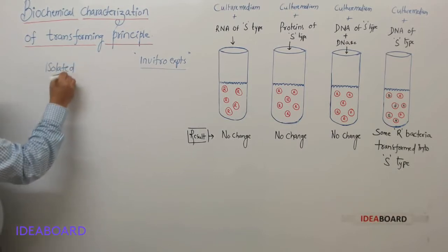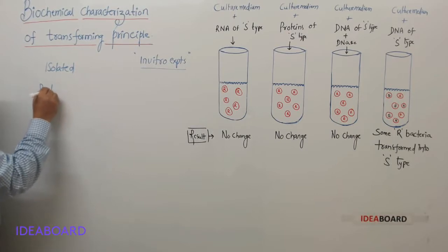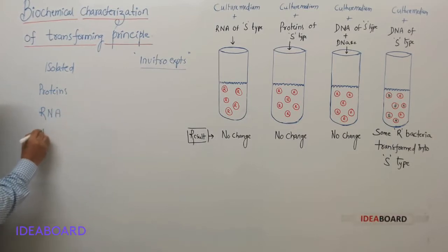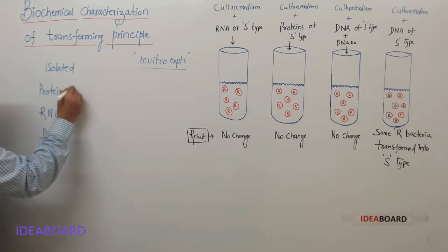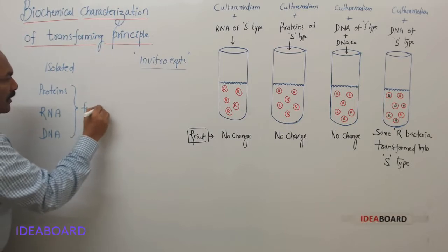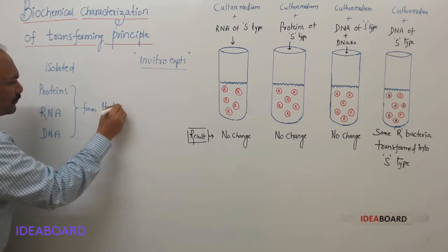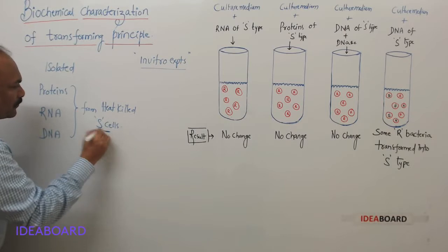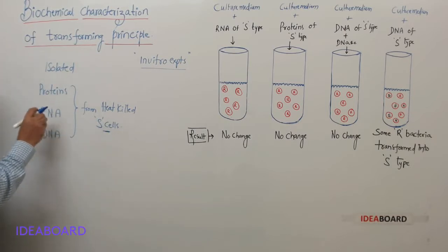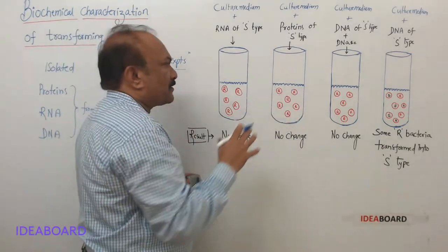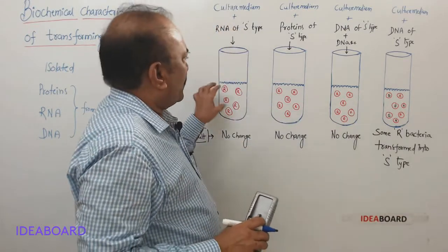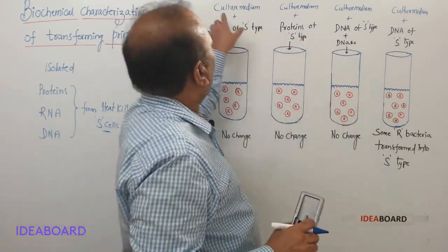They have isolated proteins, RNA, and DNA from heat-killed S strains. You just look at this diagrammatic representation. These four are test tubes, and in all test tubes you will find the medium, that is nutrient medium or culture medium.